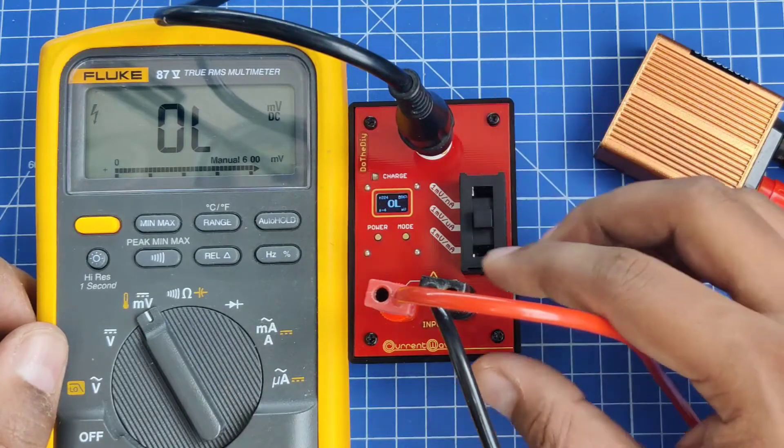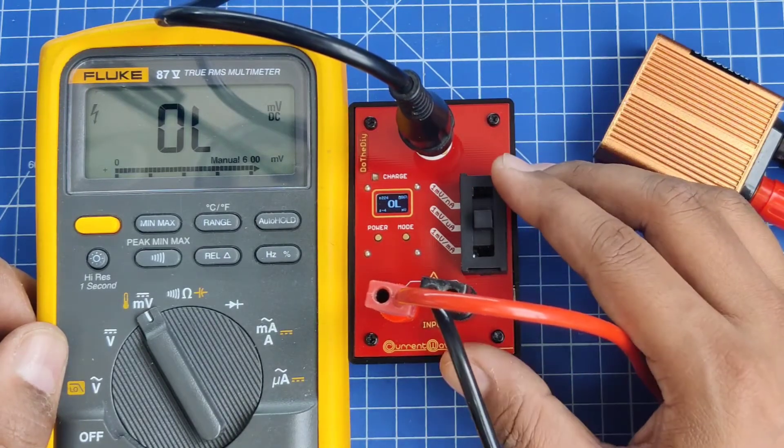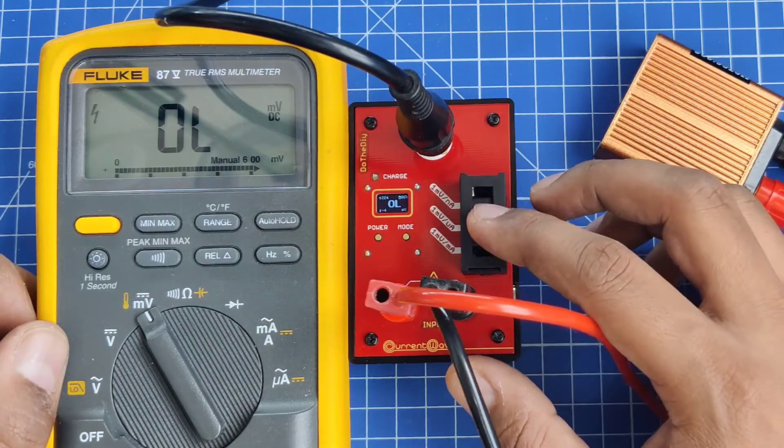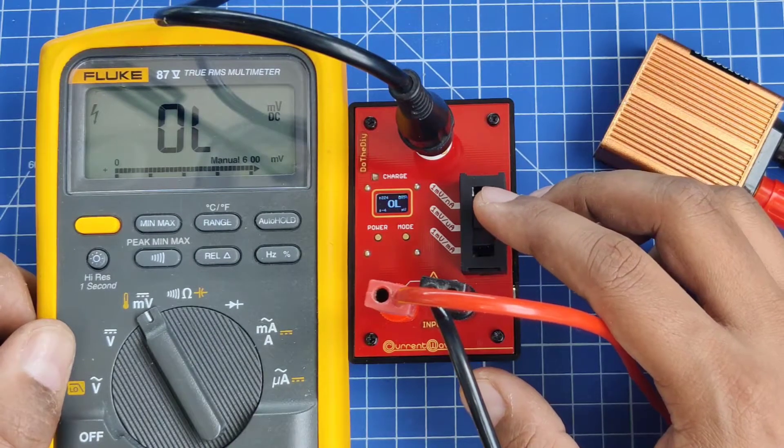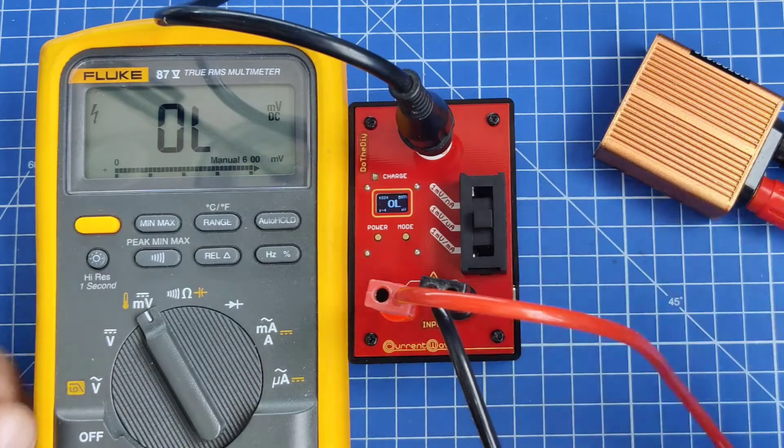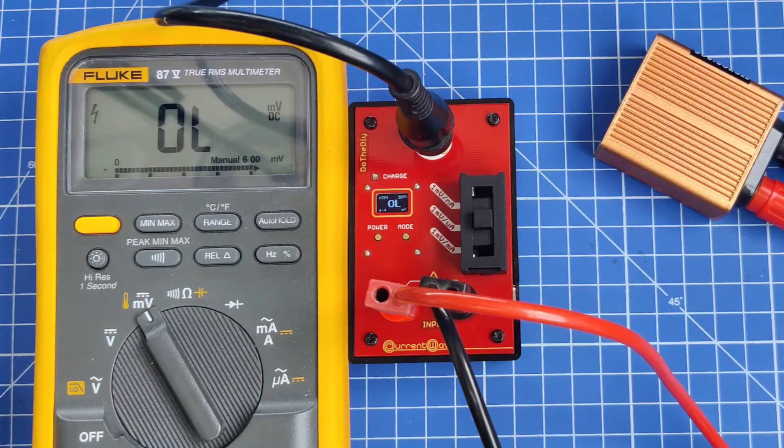This device can measure in each range plus minus 1600. In microamp range, for example, it can measure plus minus 1600 microamps. When the input is below that, it will start to measure.